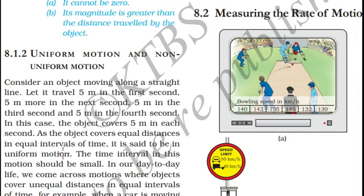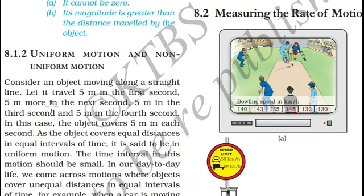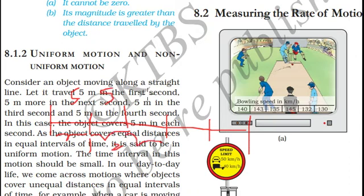Imagine an object moving along a straight line. Let it travel 5 meters in one second, 5 more meters in the next second, and 5 more meters in the next second and so on. You can notice that the object covers equal distance in equal intervals of time.